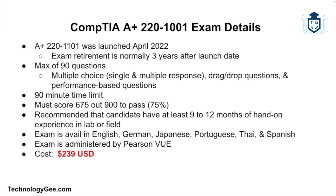The cost of the CompTIA A-Plus 220-1101 exam is $239 at the time of this recording. If you want a discount, visit my website technologyg.com and click the link that says discounted exams, or find the link in the YouTube description to save money on the full price.